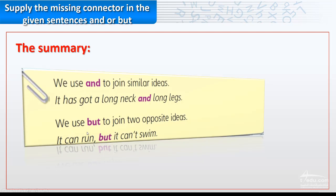We use but to join two opposite ideas. Opposite, not similar. It can run but it can't swim. So opposite, not similar. Here is opposite of this. For example, if I say I have a car but it can't move, so opposite. Got it? Thank you.